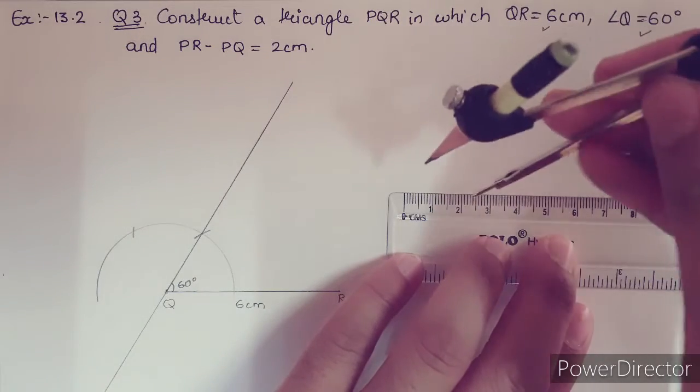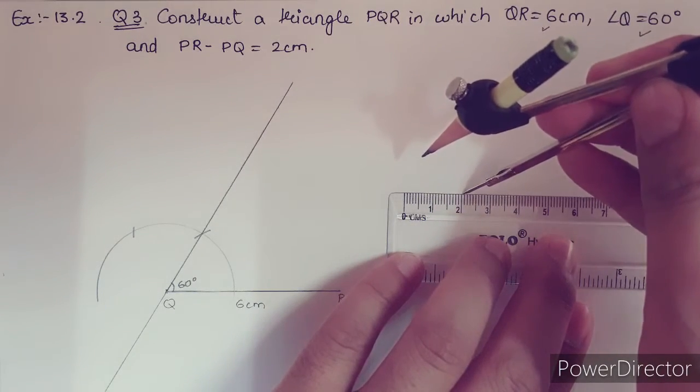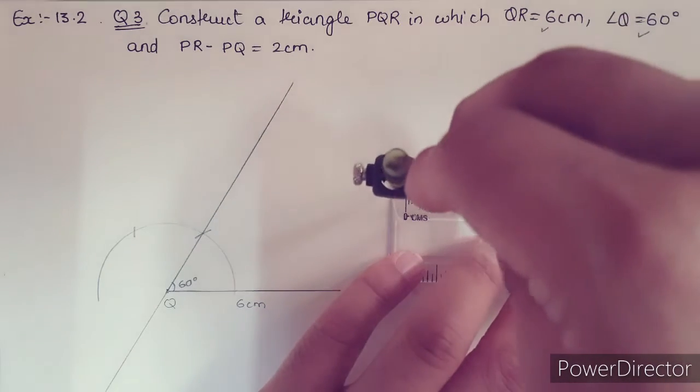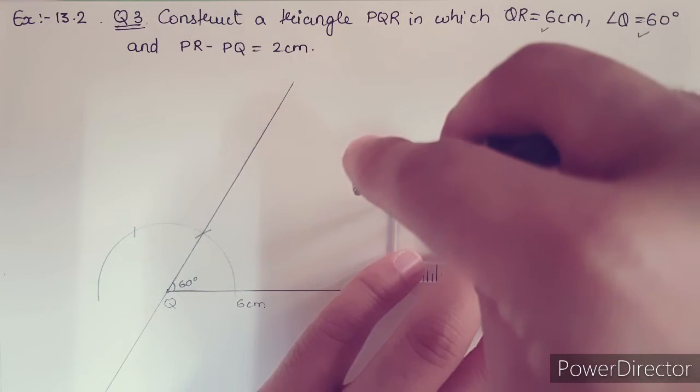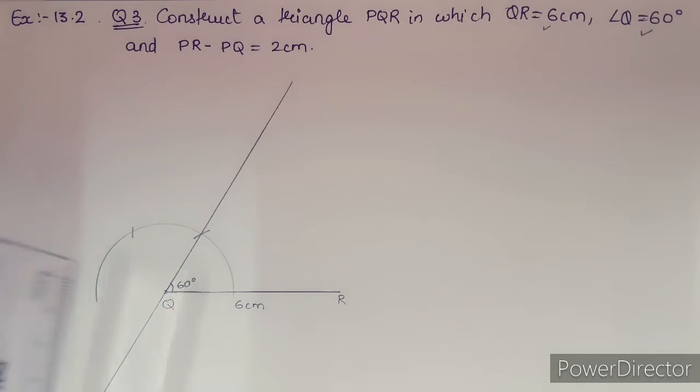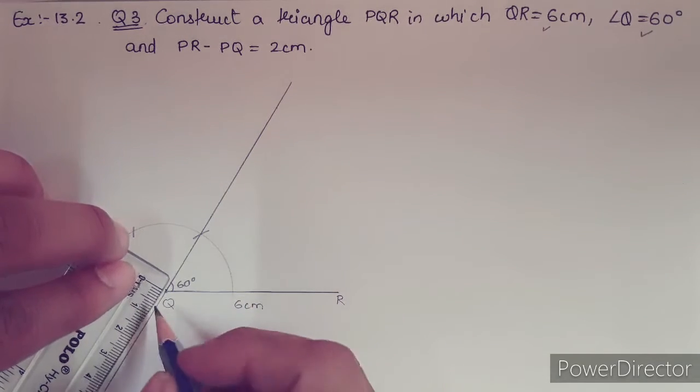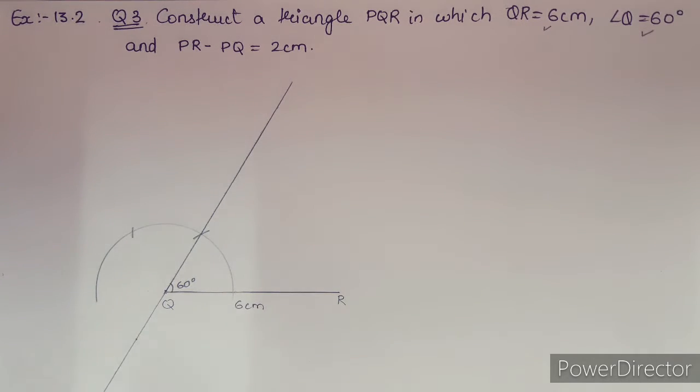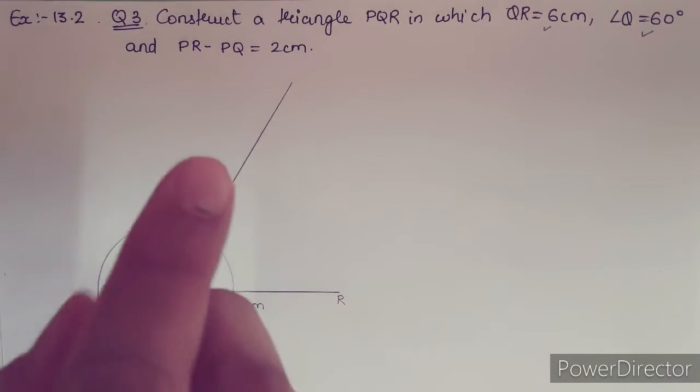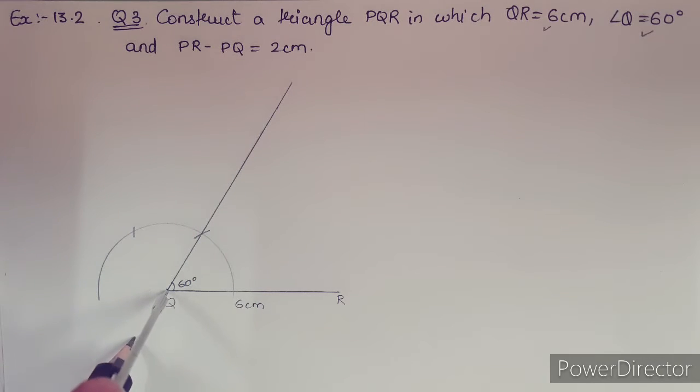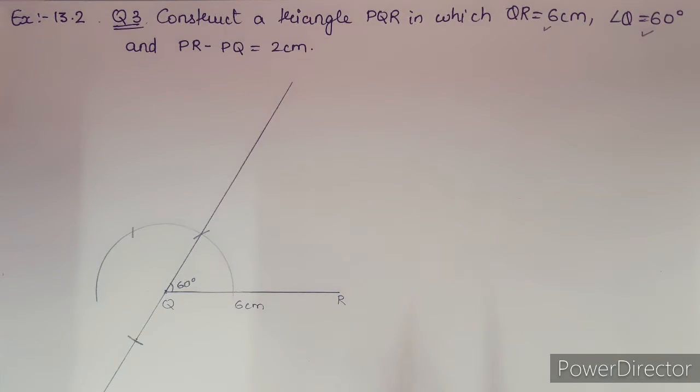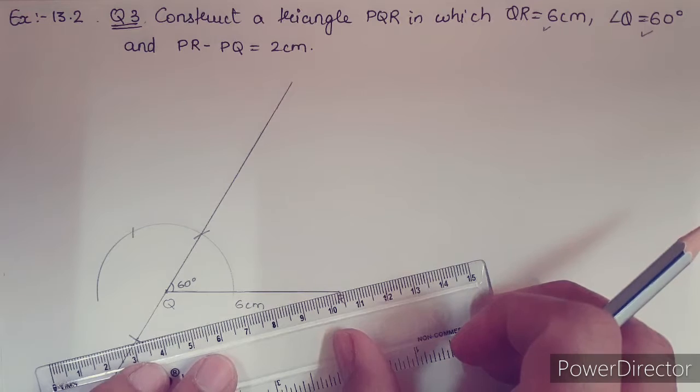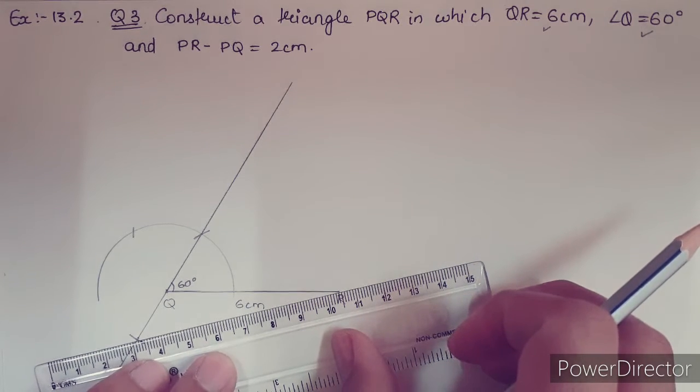Let us take that. I have taken 2 cm, or else what you can do is just simply take 2 cm like this. Both the methods are correct, and make one arc over here.